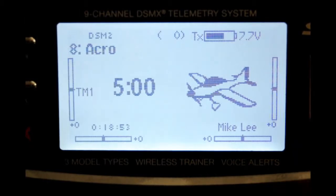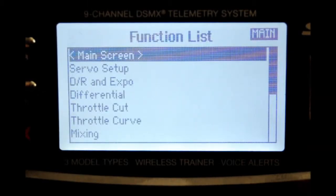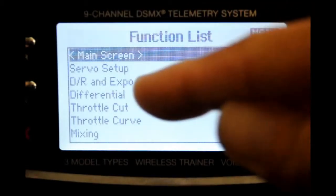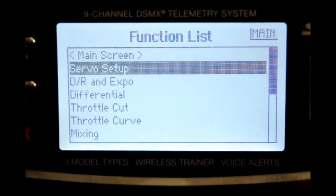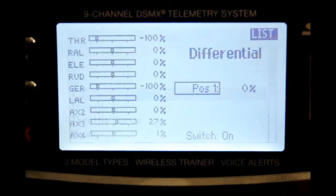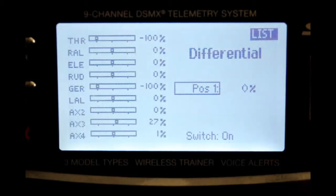Now we go to our DX9 and starting from the operational screen we're going to go into our functional screen. Depress the scroll switch once. We're now in the function list. Find differential which is right in the middle and scroll down to that. Depress the scroll switch once. Now you're in the main menu for differential.